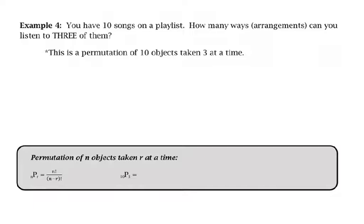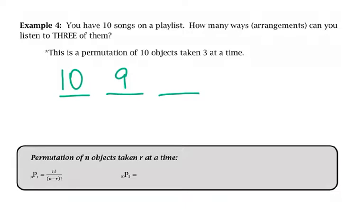Example four: you have 10 songs on a playlist. How many ways or arrangements can you listen to three of them? I have three different spots. For the first spot I have 10 choices, for the second I have nine choices, and for the third I only have eight choices left. Multiplying those together: 10 times 9 times 8 is 720. There are 720 ways that I can listen to three songs.